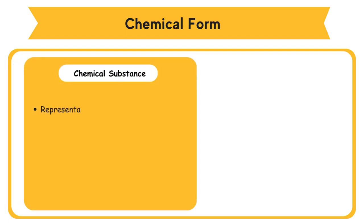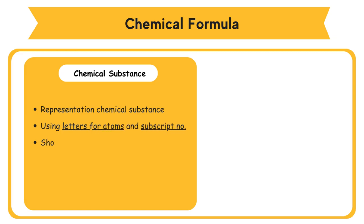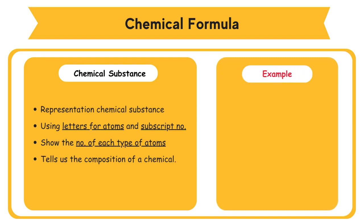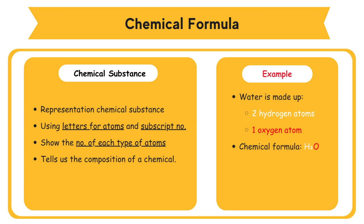A chemical formula is a representation of a chemical substance using letters for atoms and subscript numbers to show the number of each type of atoms that are present in the substance. A chemical formula tells us the composition of a chemical. For example, water is made up of two hydrogen atoms and one oxygen atom. The chemical formula is H₂O.